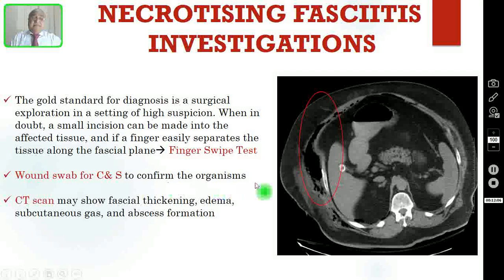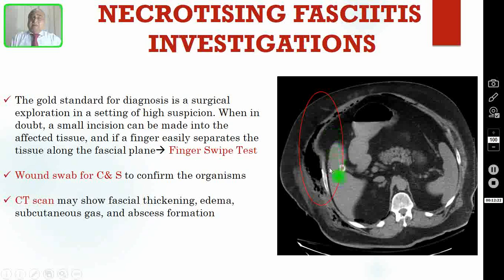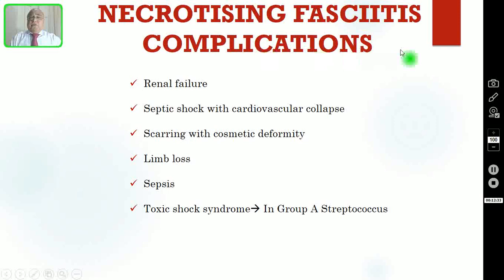You can also do a CT scan of that region, which may show fascial thickening, edema, subcutaneous gas, and abscess formation. In the CT scan shown here, you can see subcutaneous gas formation and fascial thickening — this is diagnostic of necrotizing fasciitis.